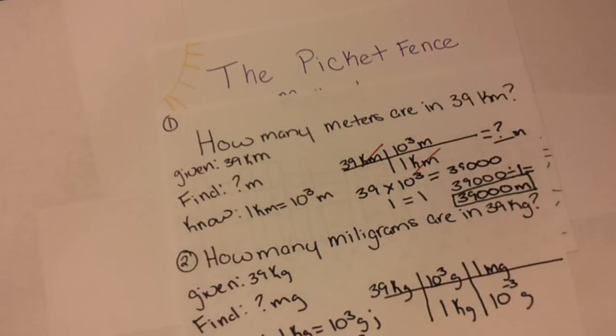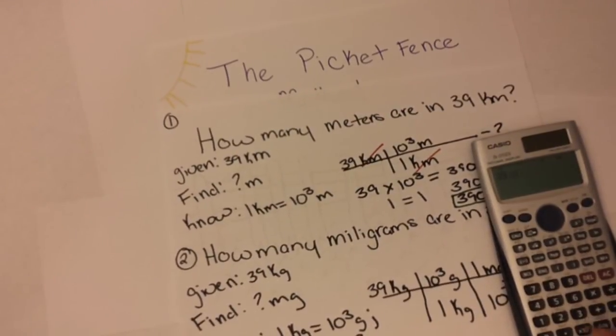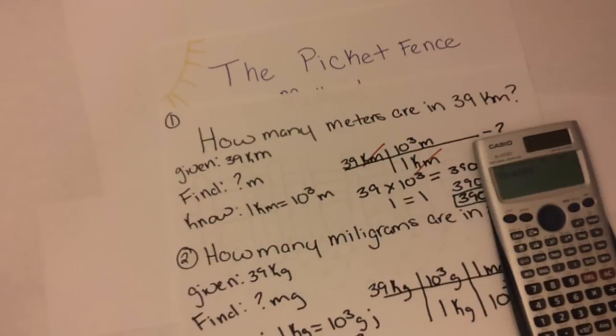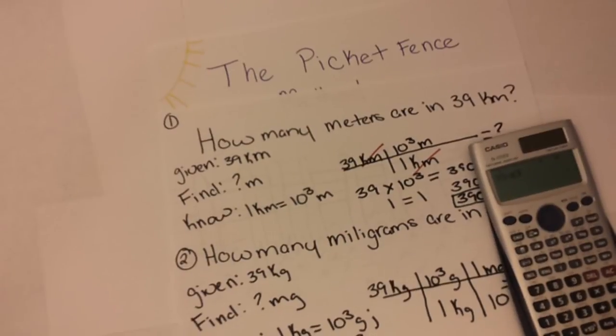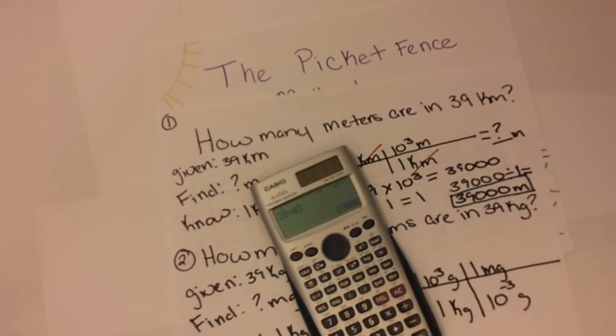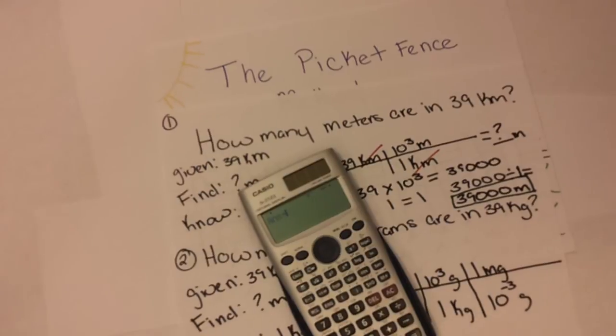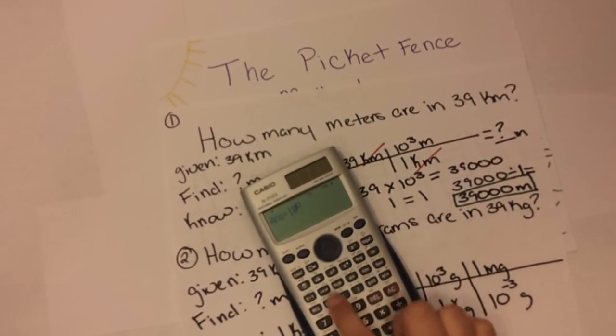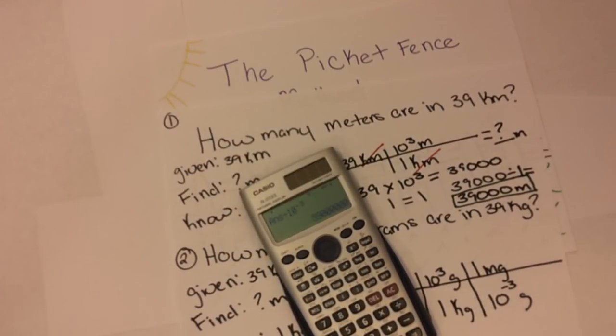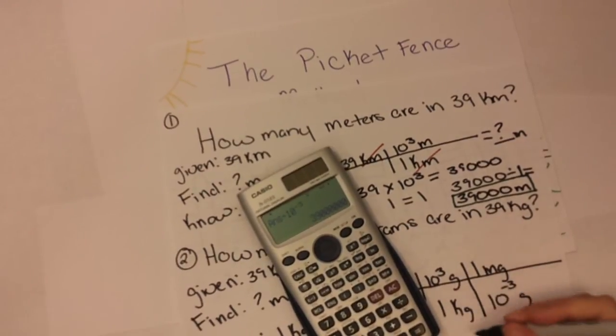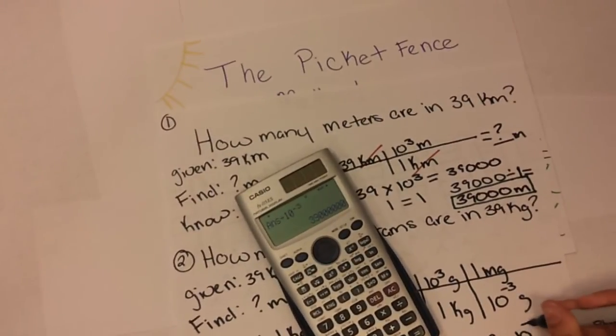And using our trusty calculator again, we are going to do 39 times 10 to the third, which equals 39,000, and then we're going to divide that by 10 to the negative third. And we get 3.9 times 10 to the seventh milligrams.